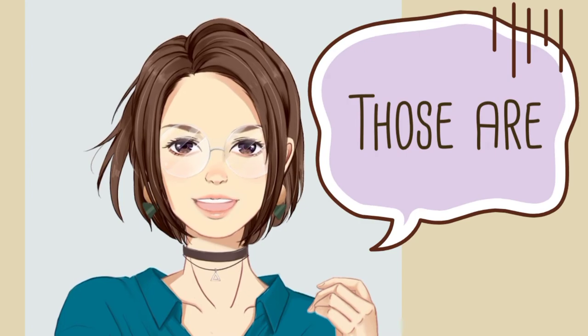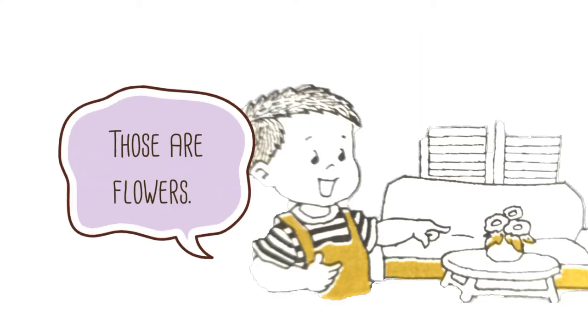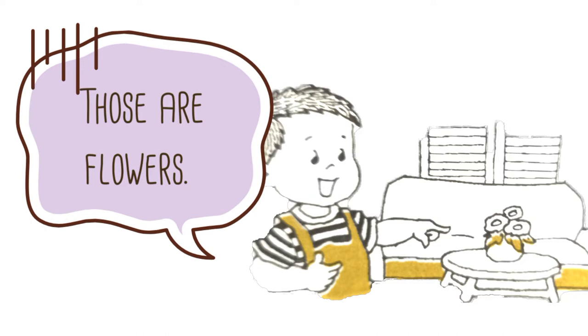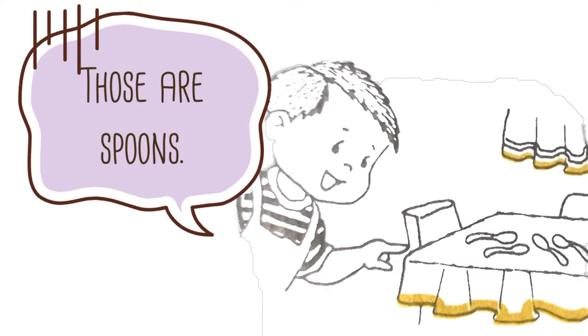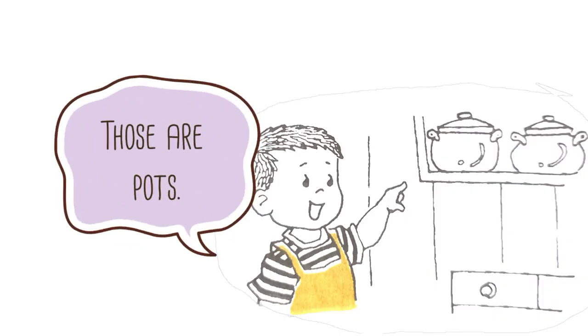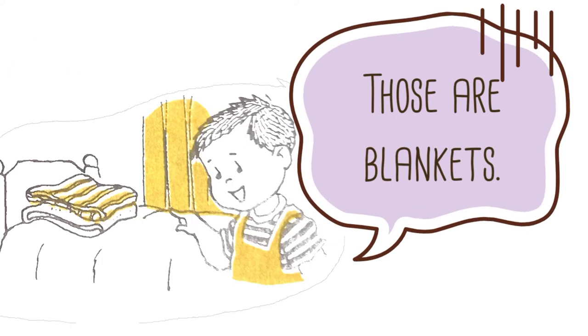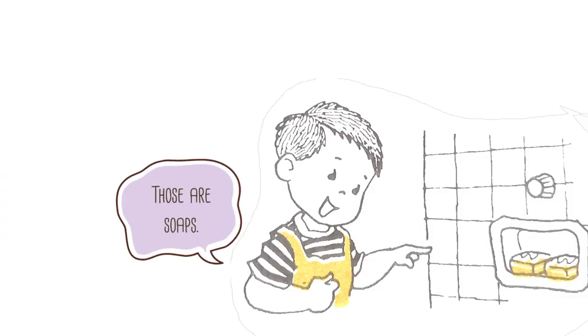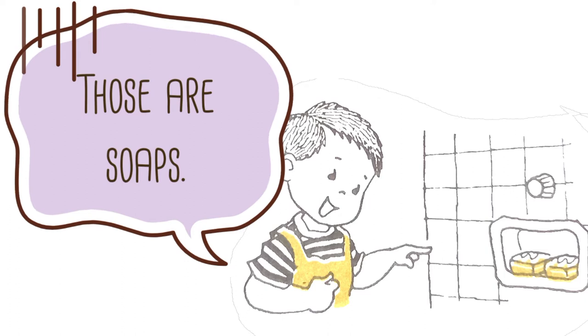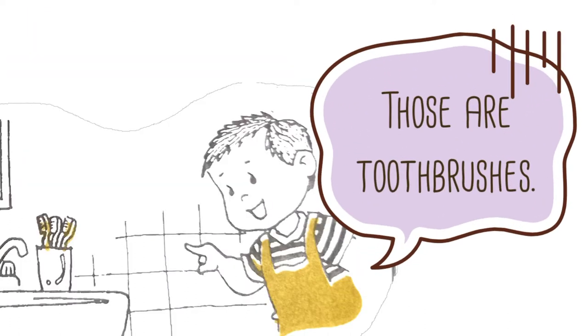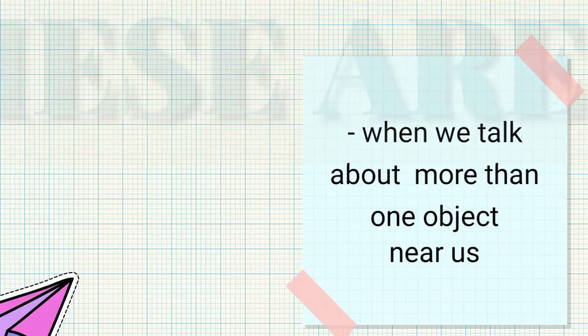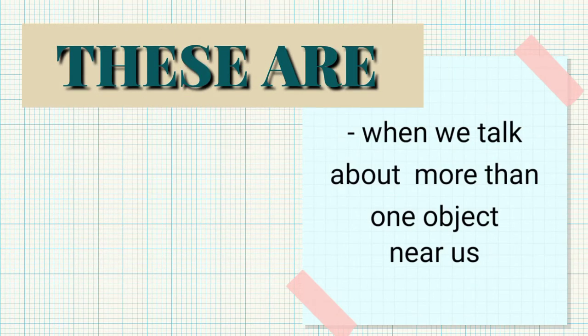Now, let's have a look at the things in Miguel's house. Miguel used 'Those are' in sentences. Those are flowers. Those are spoons. Those are pots. Those are blankets. Those are soaps. Those are toothbrushes. Notice that we use 'These are' when we talk about more than one object near us.